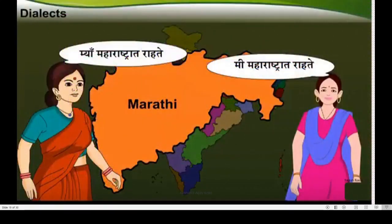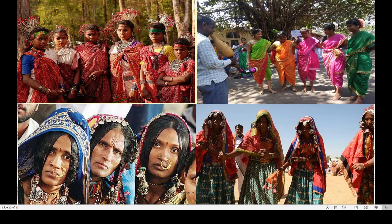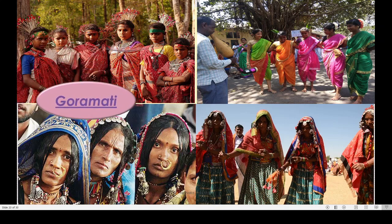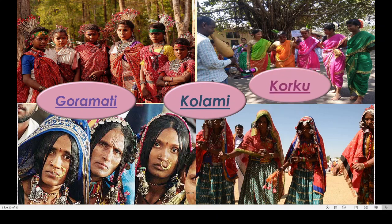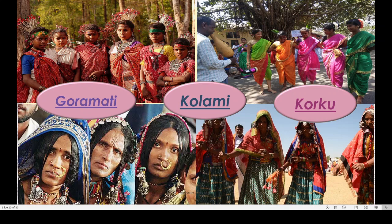The meaning is the same but some difference is there. For example, one lady says 'May Maharashtra Rahate', another says 'Me Maharashtra Rahate', and in Konkani 'How Maharashtra Rahato' - the meaning is the same but the dialects are different. That is still Marathi. Also, Goramati, Kolami, and Kurku are the traditional dialects of Adivasis - that is, tribes in Maharashtra.